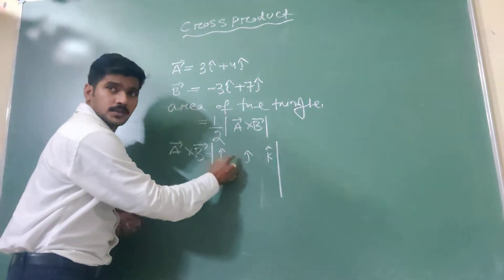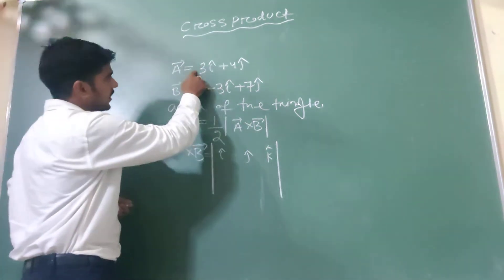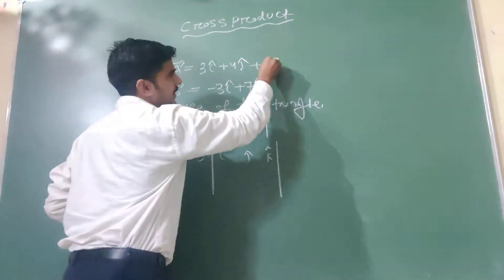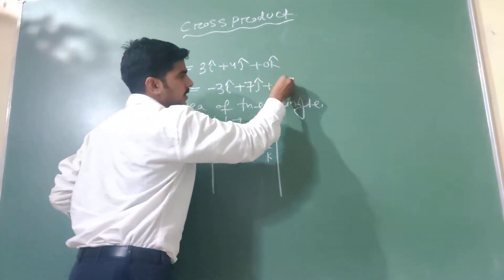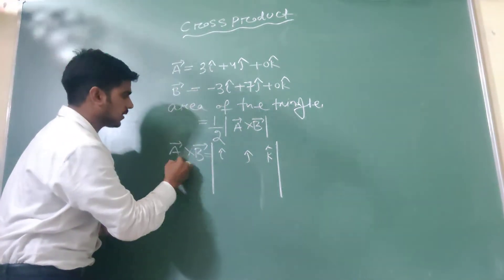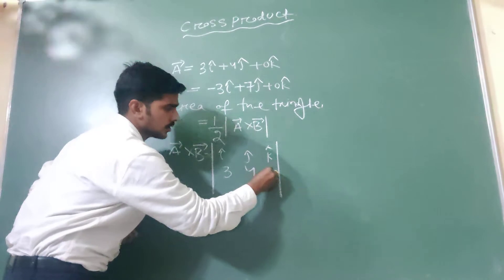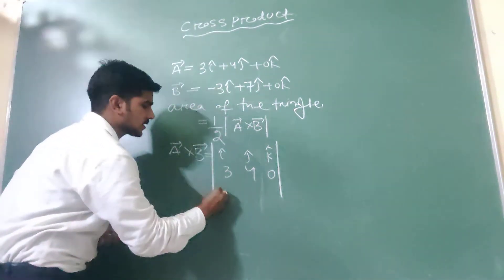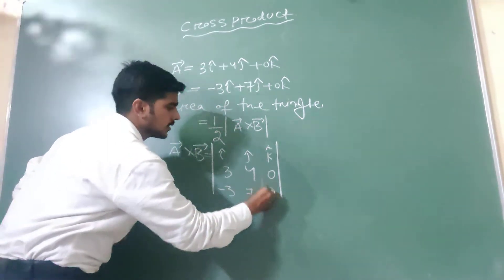Write I cap, J cap, and suppose I write K cap as well. The component of A vector — zero K cap — so we write the components of A vector as 3, 4, zero. The component of B vector is minus 3, 7, zero.